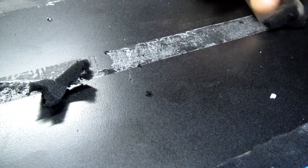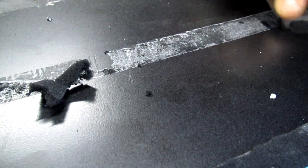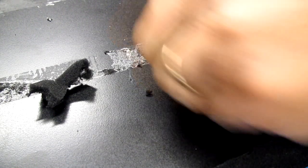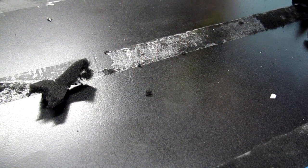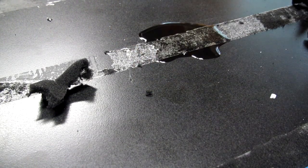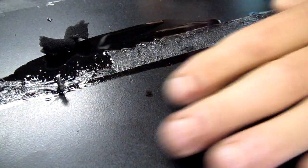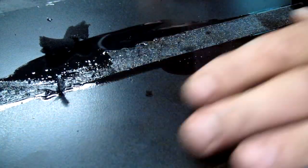Then you want to apply the Goo Gone right to that tape strip. I'll just show you real quick in one little area here. I don't want to do the whole window. Just put a little bit on there. Let it saturate into the adhesive. It's going to make it loosen up.